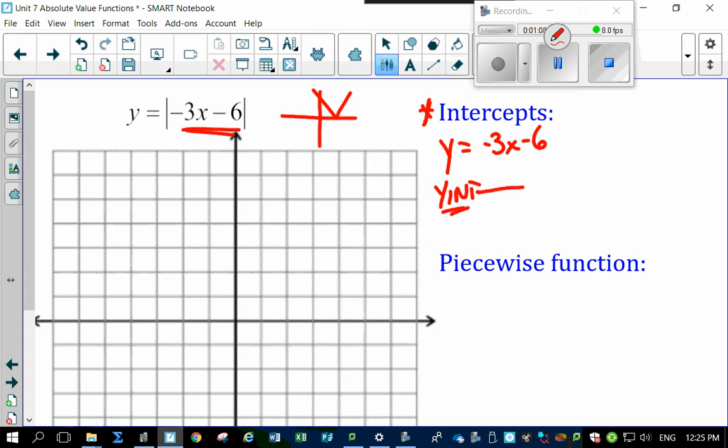Let's figure out the y-intercept. Well, that's pretty easy to figure out. The y-intercept, of course, is always the V-value. So the y-intercept is at minus 6.